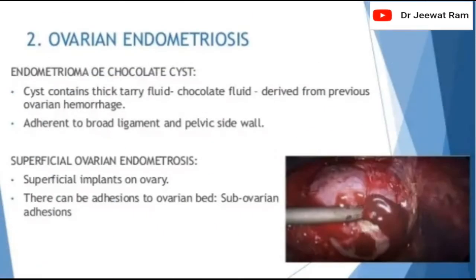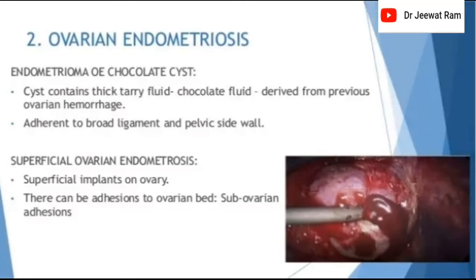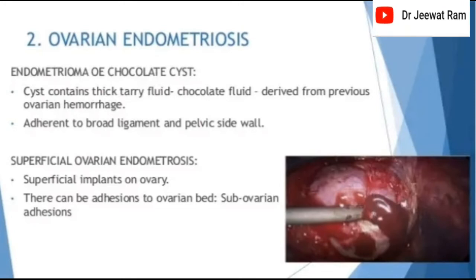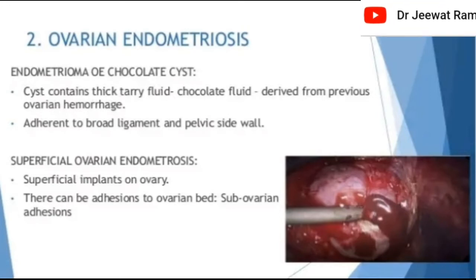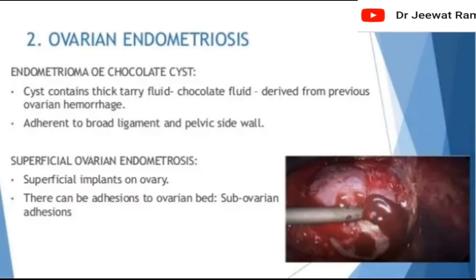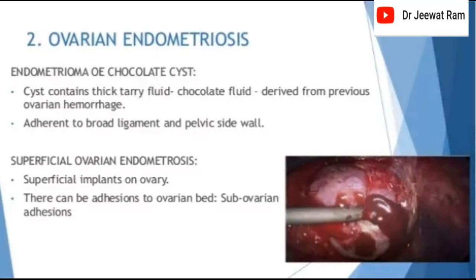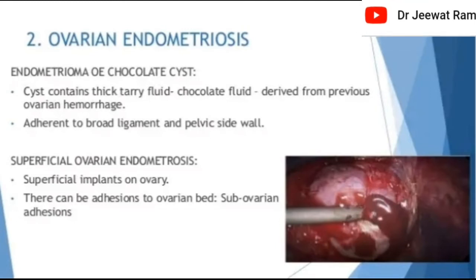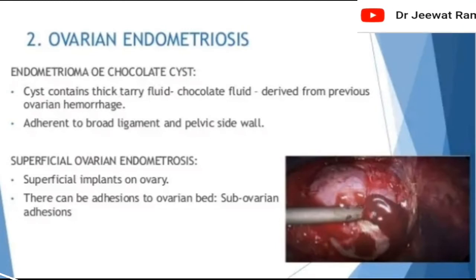Ovarian endometriosis — endometrioma or chocolate cyst: the cyst contains thick tarry fluid (chocolate fluid) derived from previous ovarian hemorrhage, and is adherent to the broad ligament and pelvic side wall. Superficial ovarian endometriosis presents as superficial implants on the ovary with possible adherence to the ovarian bed or sub-ovarian adhesions.